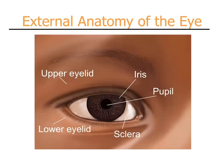When we talk about the external anatomy of the eye, people frequently refer to the pupil and iris. It should be kept in mind that the pupil is the black hole in the middle of the iris. The white part of the eye is the sclera, although it is covered by a thin layer called the conjunctiva.